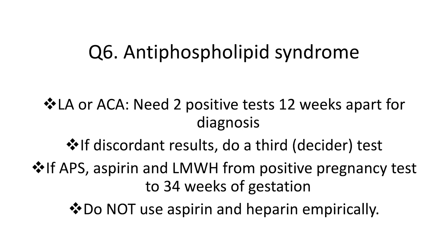Let's now move on to treatment. Question 6: How should you manage women with antiphospholipid syndrome (APS)? You need two positive tests at least 12 weeks apart. If results are discordant, a third test should be done as the deciding test before making a diagnosis of APS. If the patient has APS, the RCOG recommends aspirin and low molecular weight heparin from positive pregnancy test to 34 weeks of pregnancy. Importantly, if there is no thrombophilia, aspirin and heparin should not be given, as that could potentially increase the risk of miscarriage.